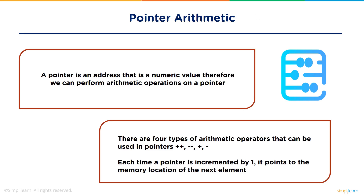C++ allows us to perform addition and subtraction operations on pointers. A pointer is basically an address — it's a numeric value — so operations like addition and subtraction can easily be done on pointers. There are four types of arithmetic operations that can be used: increment, decrement, addition, and subtraction.